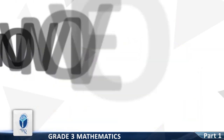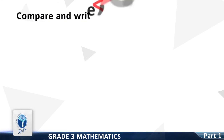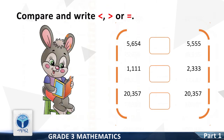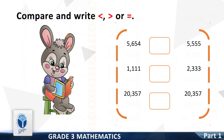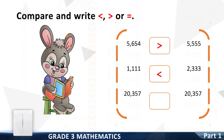Good. Now we move to the next resource pack concept: Compare and write less than, greater than, or equal. Let's start. 5,654 vs 5,555 — greater than. Next: 11,111 vs 2,333 — less than. Next: 20,357 vs 20,357 — equal to.